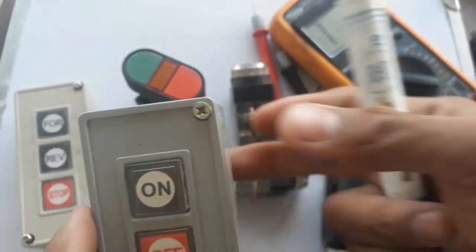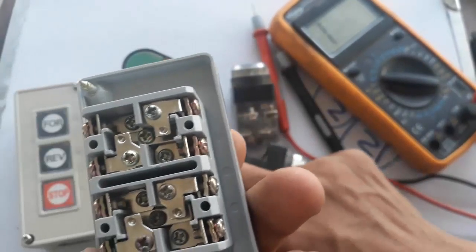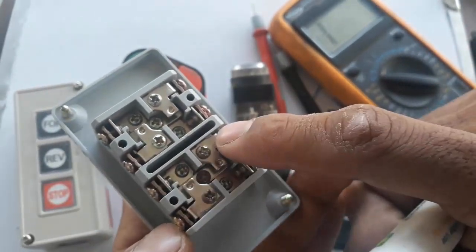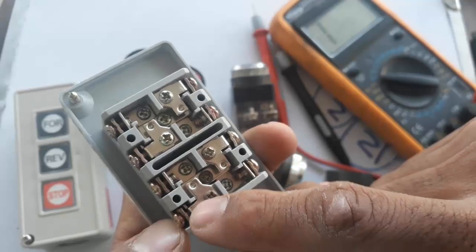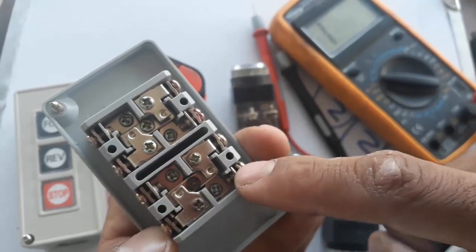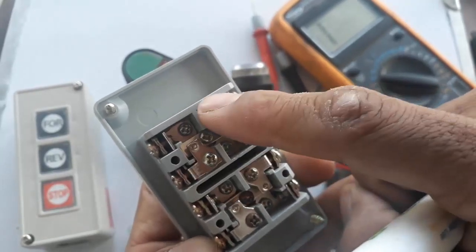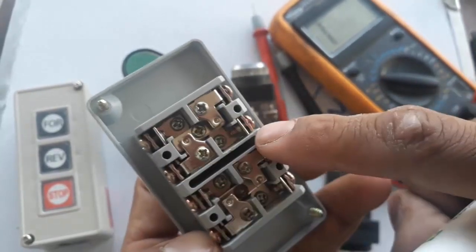Here are some more NC and NO switches. So I have four terminals on both sides. These two terminals are NC with one another and these two terminals are NO with one another. Just like this, these are NC and these are NO.